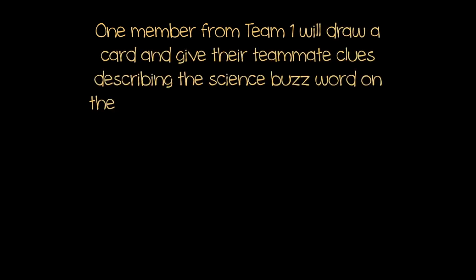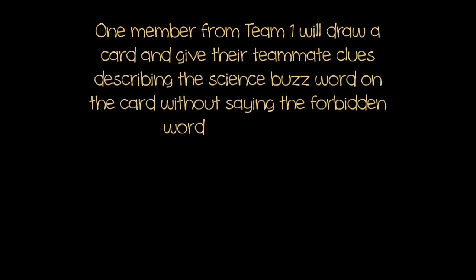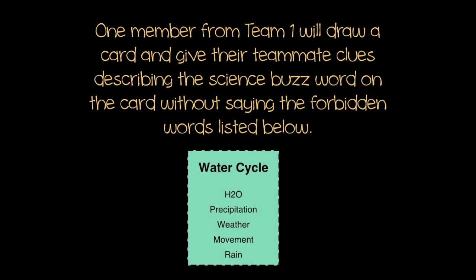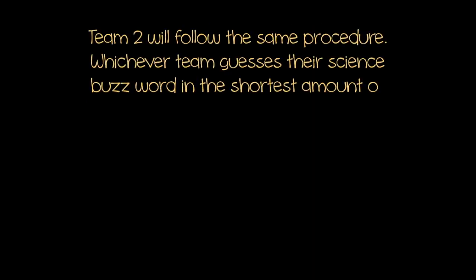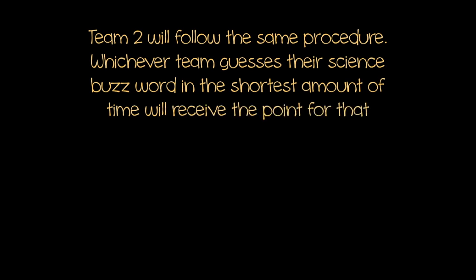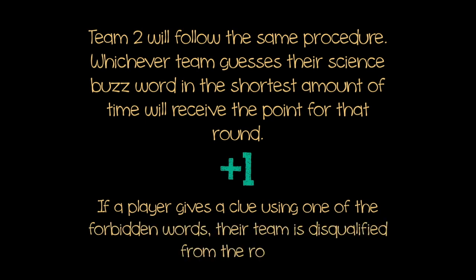One member from Team 1 will draw a card and give their teammate clues describing the science buzzword on the card, without saying the forbidden words listed below. Team 2 will follow the same procedure. Whichever team guesses their science buzzword in the shortest amount of time will receive a point for that round. If a player gives a clue using one of the forbidden words, their team is disqualified from that round.